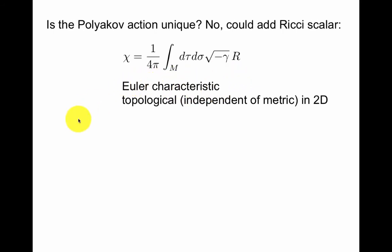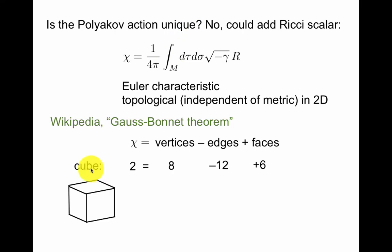Now Euler didn't define the Euler characteristic like this. It follows from the Gauss-Bonnet theorem that Euler's definition, which is more like this in topology, as we would call it today, is equivalent to this geometrical definition. For example, cube has Euler characteristic 2.